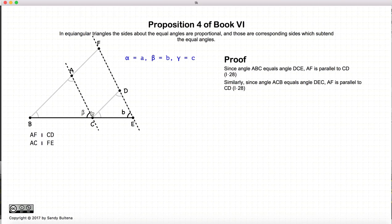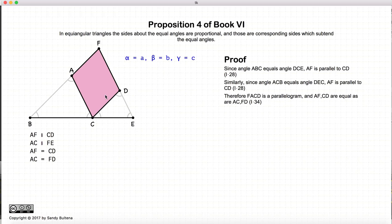Similarly, we have the lines AC and FE where the internal and external angles are equal, and again by Proposition 28 of Book 1, that implies AC and FE are parallel. So these two pairs of lines are parallel, which means that AFDC is a parallelogram. And if it is a parallelogram, then AF equals CD and AC equals FD, by Proposition 34, Book 1.